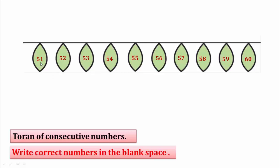Look here: 51, 52, 53, 54, 55, 56, 57, 58, 59, 60. This is the toron of consecutive numbers 51 to 60. Do you understand? Good. Thank you, students.